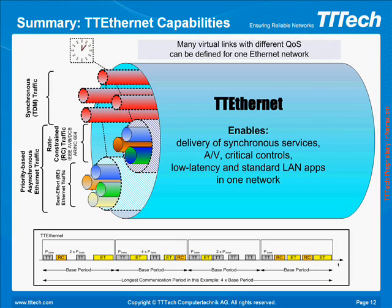With TT Ethernet, robustly partitioned multimedia data streams, critical control data, and standard LAN messages can operate in one network without congestion or unintended interactions. TT Ethernet provides a set of time-triggered services implemented on top of standard IEEE 802.3 Ethernet. These services are designed to enable design of synchronous, highly dependable embedded computing and networking systems capable of tolerating multiple faults.